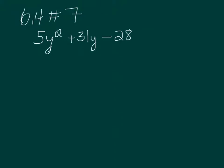Okay, we're going to factor 5y squared plus 31y minus 28 using the AC method.